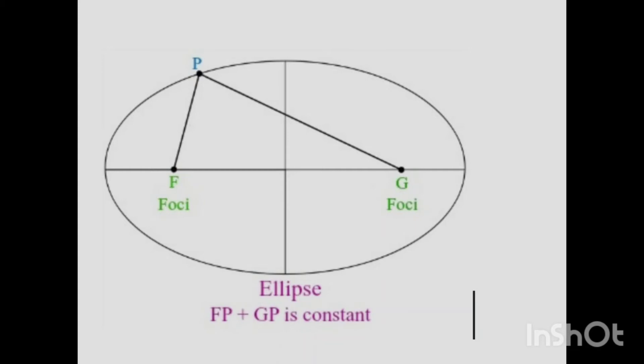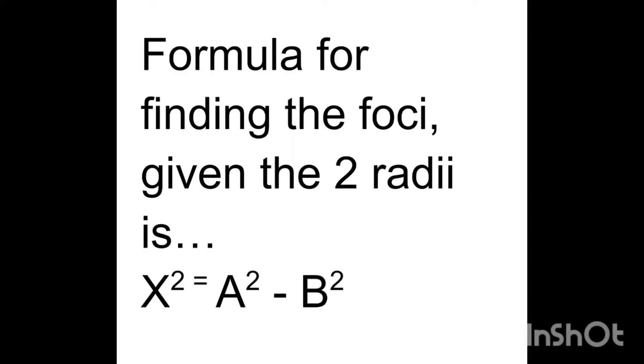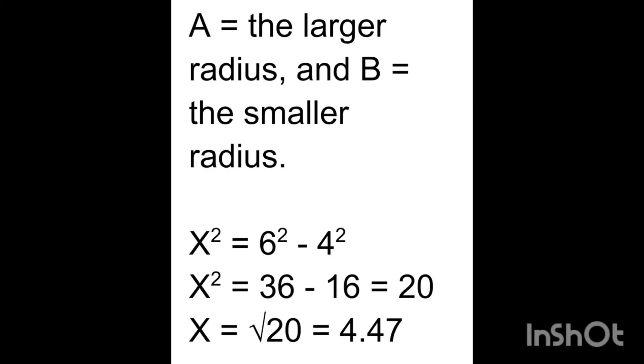The formula for finding the foci is X² = A² - B². A² is the larger radius and B² is the smaller radius.